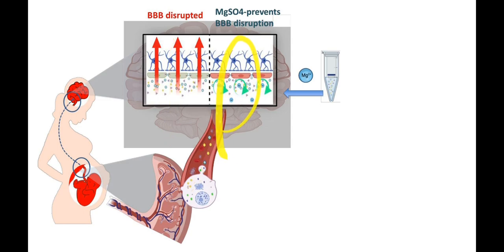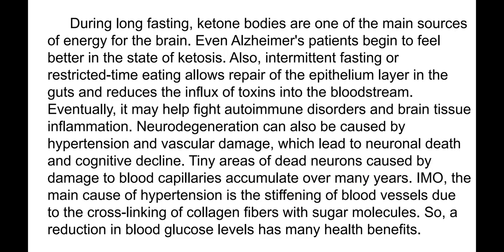Magnesium is very important to prevent disruption of the blood-brain barrier. So it is not only the ketogenic diet, but also magnesium — and potassium — that are absolutely important for brain tissue. I use magnesium in the form of magnesium sulfate, magnesium chloride, or magnesium citrate. During long fasting, ketone bodies are one of the main energy sources for the brain; even Alzheimer's patients begin to feel better in a state of ketosis or fasting. Intermittent fasting or time-restricted eating also allows repair of the gut epithelium and reduces influx of toxins into the bloodstream, potentially helping fight autoimmune disorders and brain tissue inflammation.